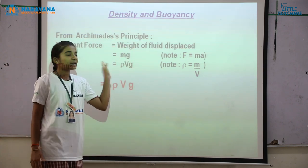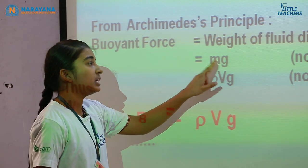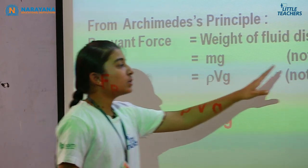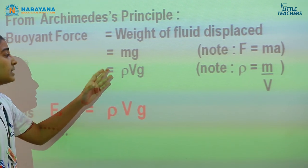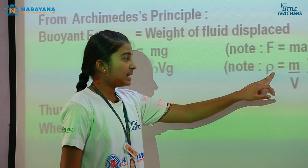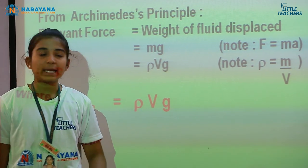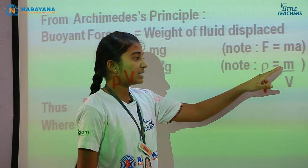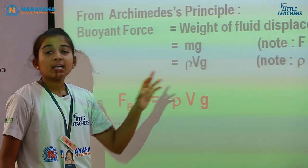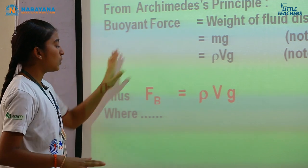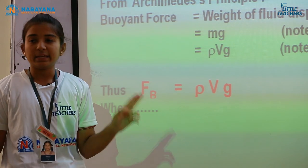The weight formula is mg. Force equals mass into acceleration. Density, represented by rho, equals mass divided by volume. From that we get rho times V times g. Therefore, the formula for buoyant force Fb equals rho-L times VL times g.